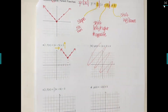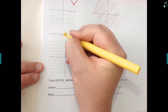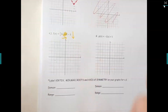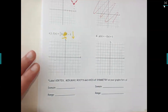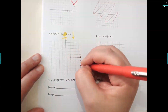Skip b and go to c. The number inside the bars on letter c is negative six, which means I go to the right six. What about the minus three? Down three. So on your graph, count to the right six and then down three — one, two, three, four, five, six, then one, two, three.